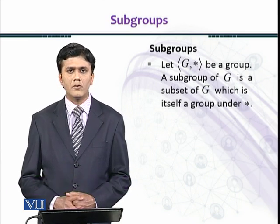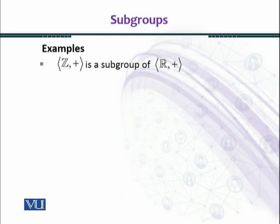Set of integers under addition is a subgroup of set of real numbers under addition. Every integer is a real number and we have shown before that set of integers form a group under binary operation addition. So (Z, +) is a subgroup of (R, +).